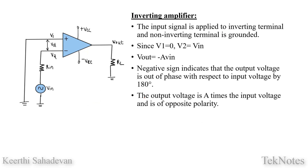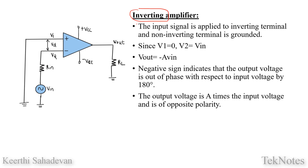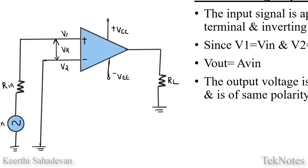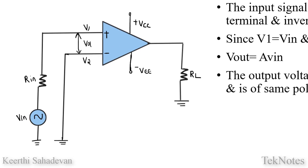The Inverting Amplifier — in this configuration there will be only one input. If you apply one input to the inverting terminal, the output will be inverted. For the Non-Inverting Amplifier, if you apply one input, it will be non-inverting.